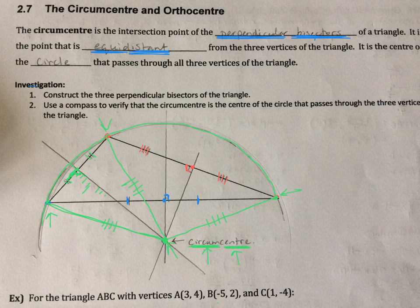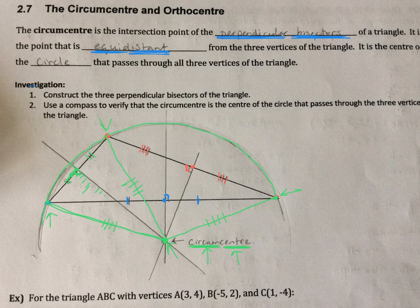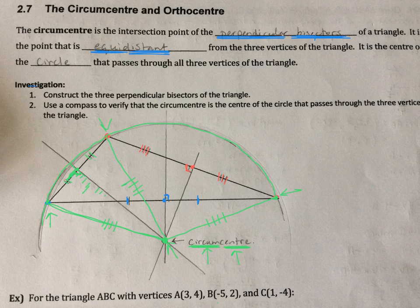So below here we have for the triangle ABC with these vertices, you are going to figure out where the circumcenter is. Now it works similar to the long process of the centroid, not the short process. This one does not have a shortcut, so you have to do this. Unfortunately, it is a long process.